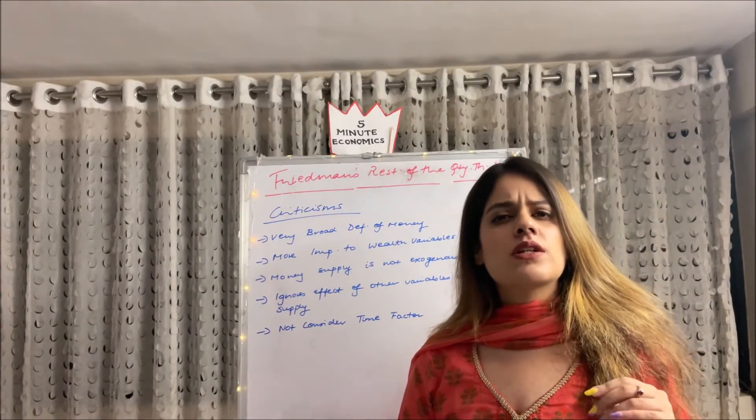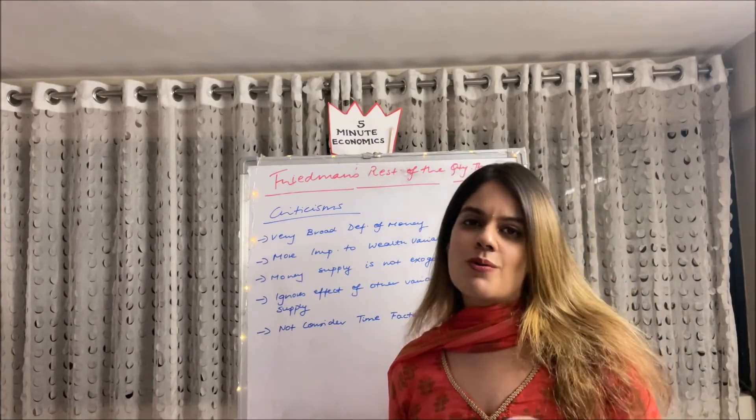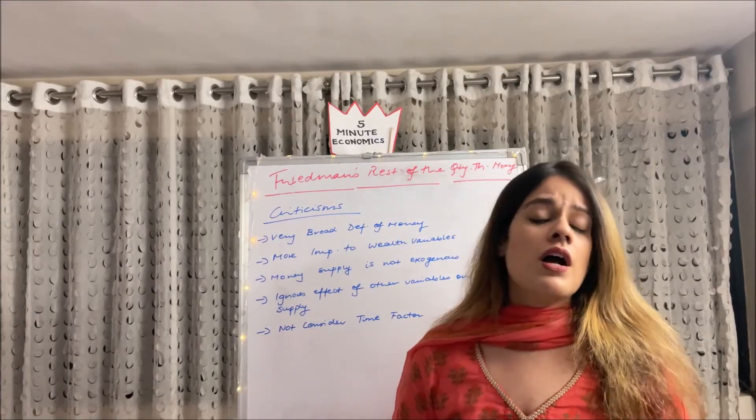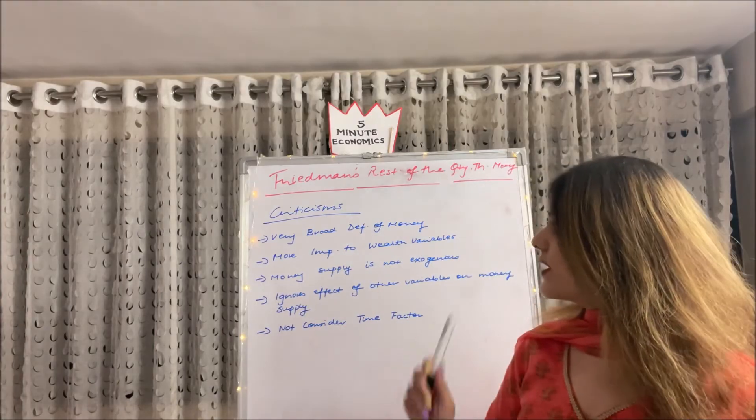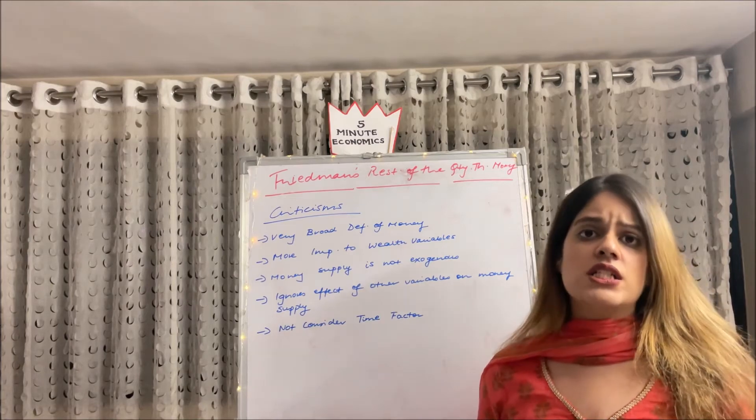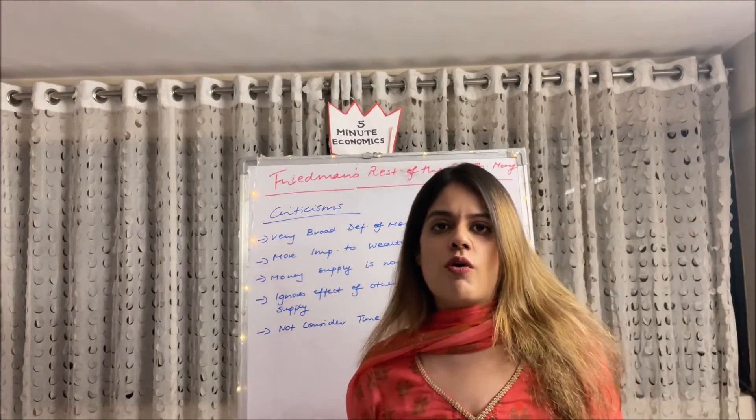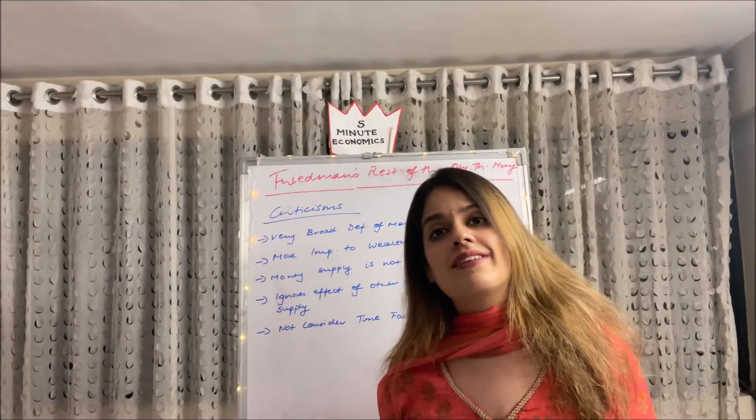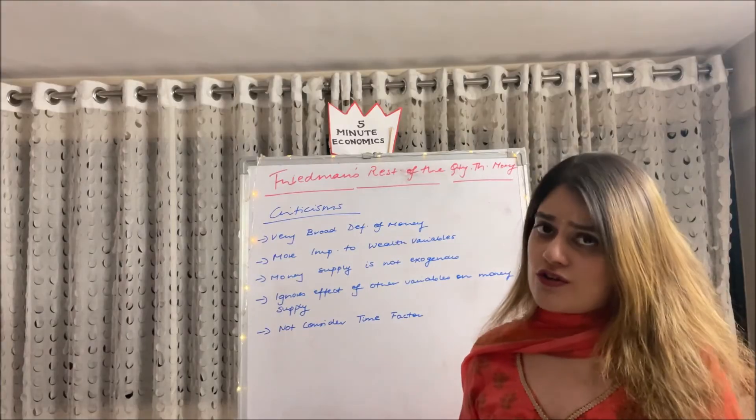So lastly guys moving ahead to the criticisms of this theory. Of course any theory, be it the best theory in the world, is always criticized. So this theory by Milton Friedman was also criticized compared to the Keynesian theory, and there were many economists who were not happy with this theory. Number one, they said that they have given very broad definition of money, currency, time deposits. So that's why they said that they have given way too broad definition of money. Secondly they said that you have given too much importance to wealth rather than that income should have been given importance, but wealth is considered very important under this theory which is not right.